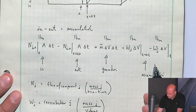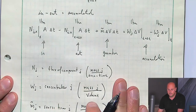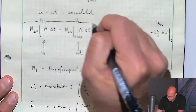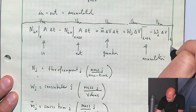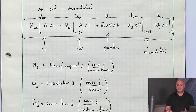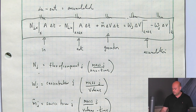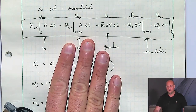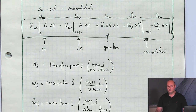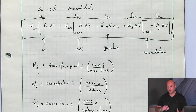We'll take the limit as δT and δX go to zero — a very small control volume and very small time step — which turns this algebraic equation into a differential equation describing component concentration as a function of space X and time T.